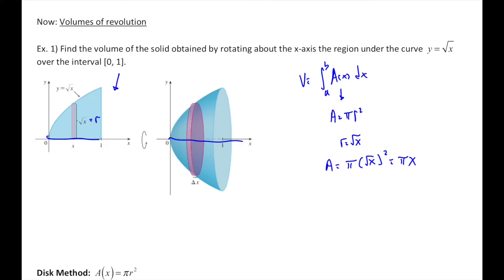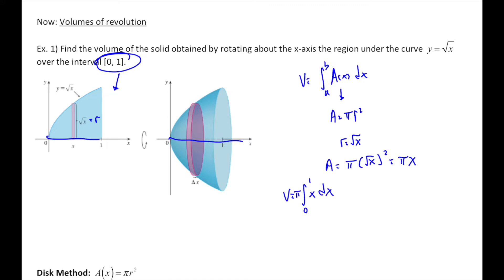Using integral notation to take an infinite number of those slices gives us the entire paraboloid shape. Our volume is the integral from 0 to 1 — because that's the interval over which we're rotating — of π x dx, taking π out as a constant. Anti-differentiating gives us π times one-half x squared evaluated from 0 to 1. Substituting in 1 and subtracting the substitution with 0, we get a volume of π over 2 cubic units.